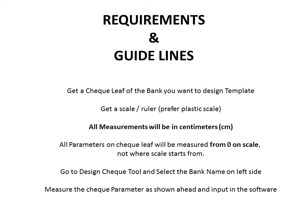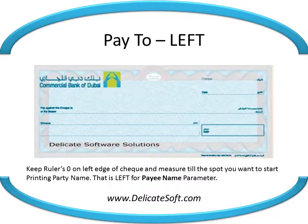Now go to the designer tool and select the bank name on the left side. Measure the check parameter as shown ahead and enter the measurement in the software. Keep the scale's zero on the left edge of the check and measure till the place you want to start printing the party name. That is the left parameter for party name.